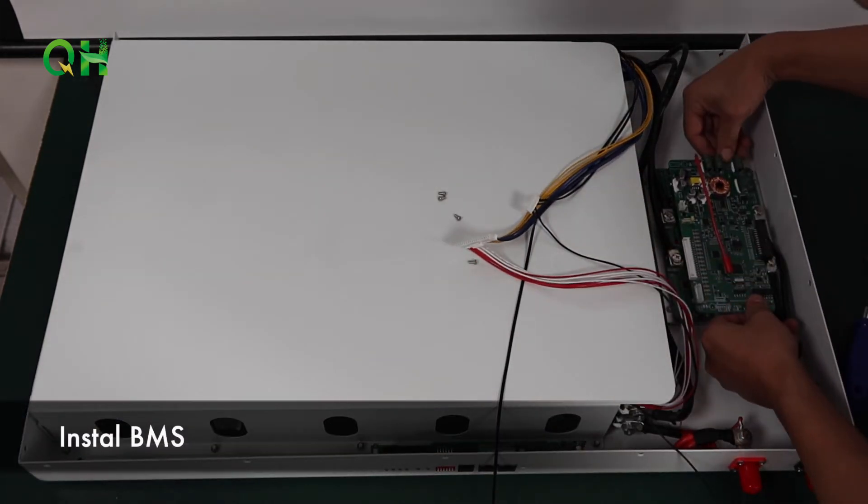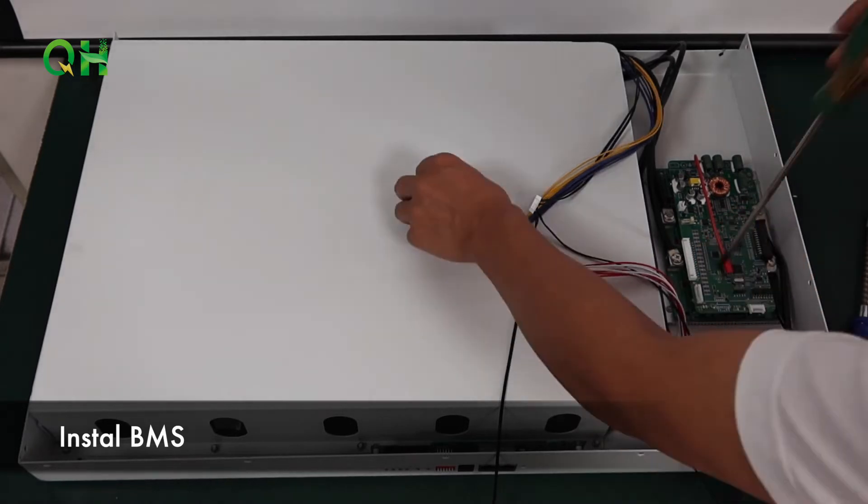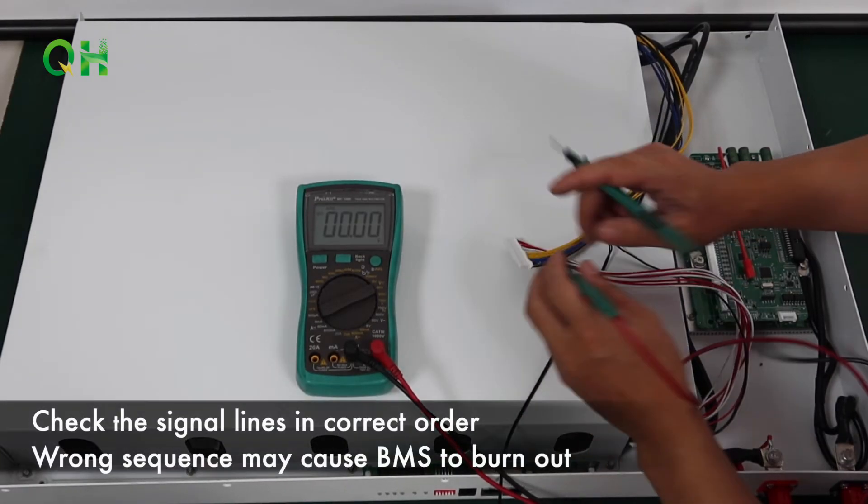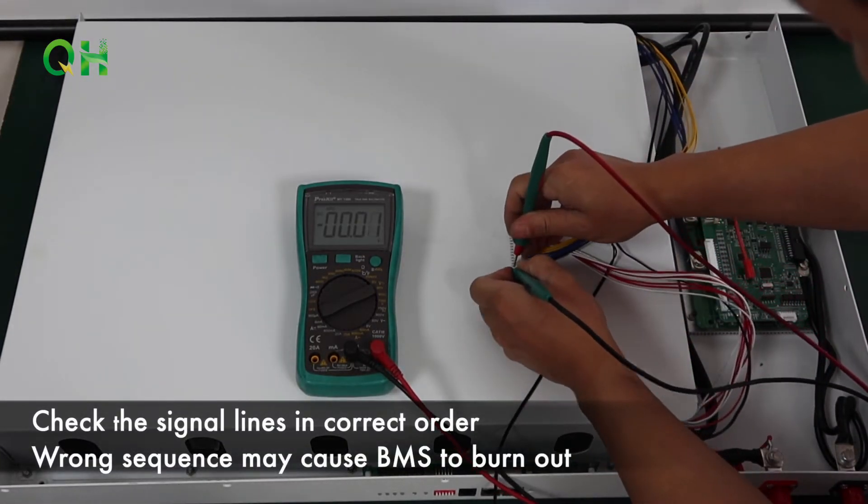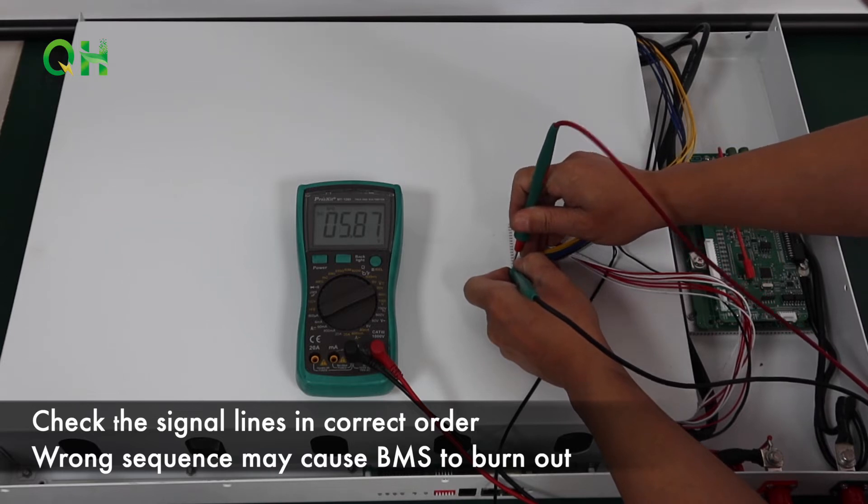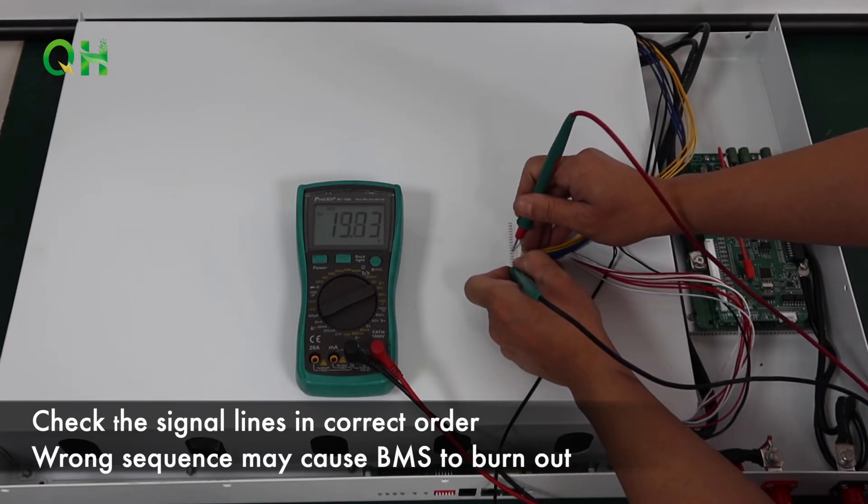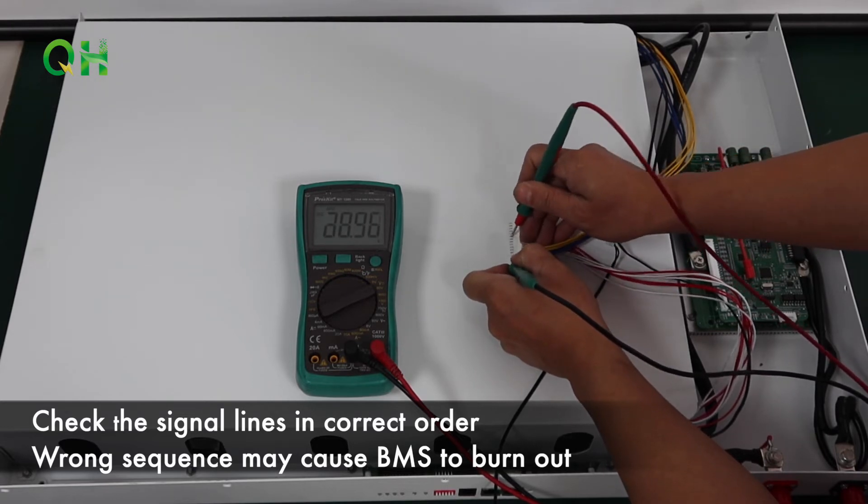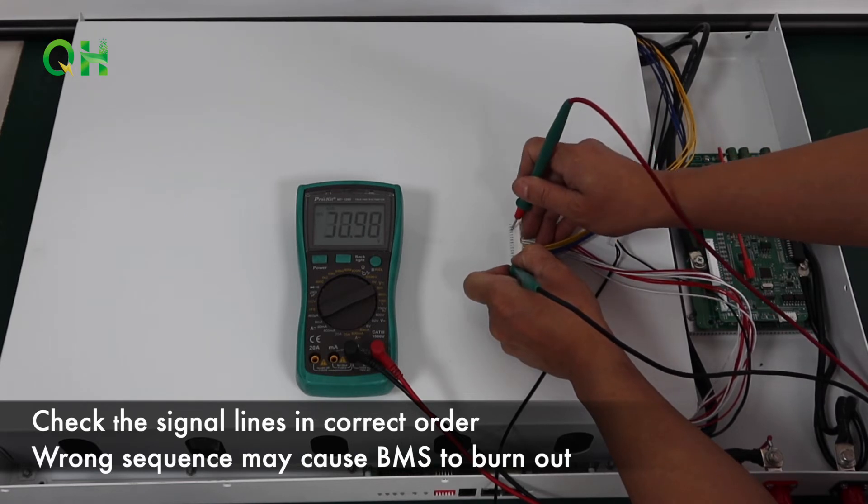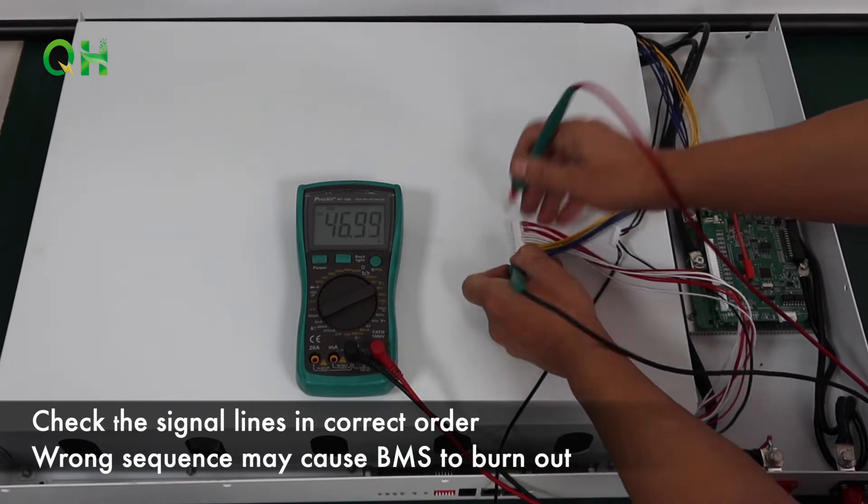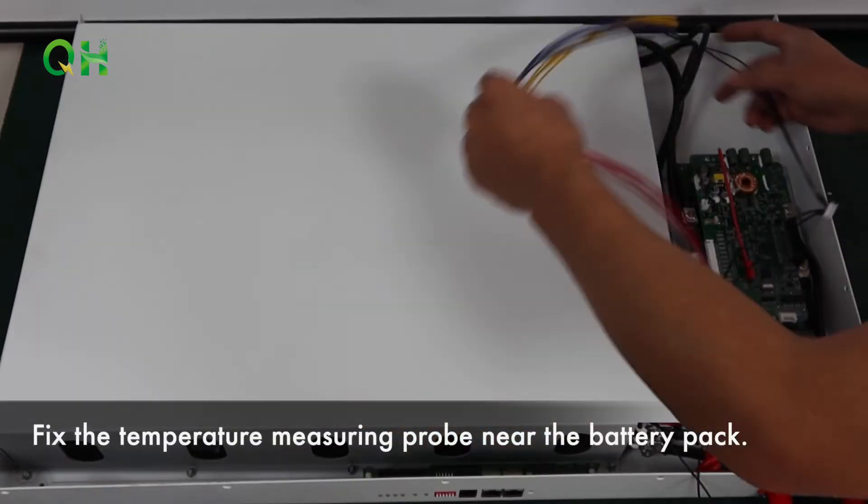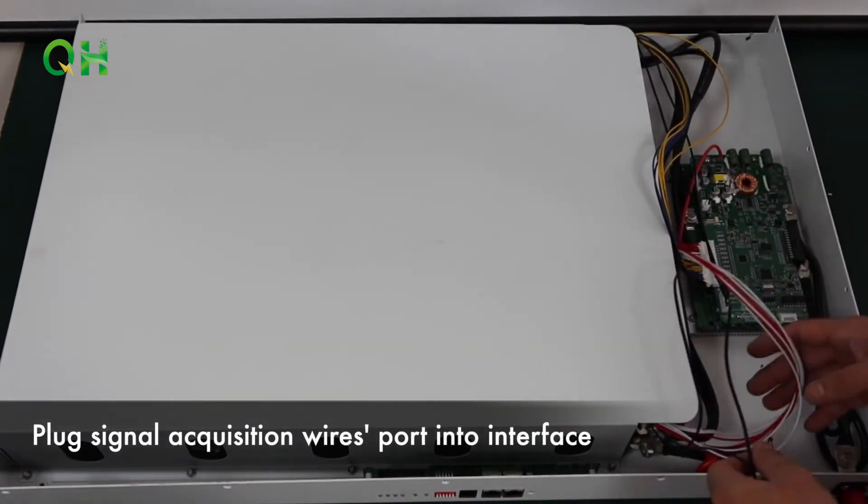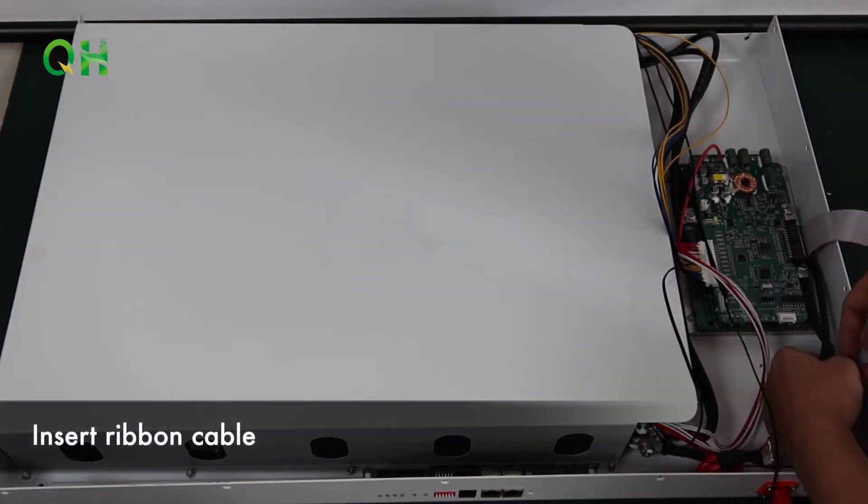Install BMS. Check the signal lines in correct order. Wrong sequence may cause BMS to burn out. Fix the temperature measuring probe near the battery pack. Plug signal acquisition wire support into interface. Insert ribbon tape.